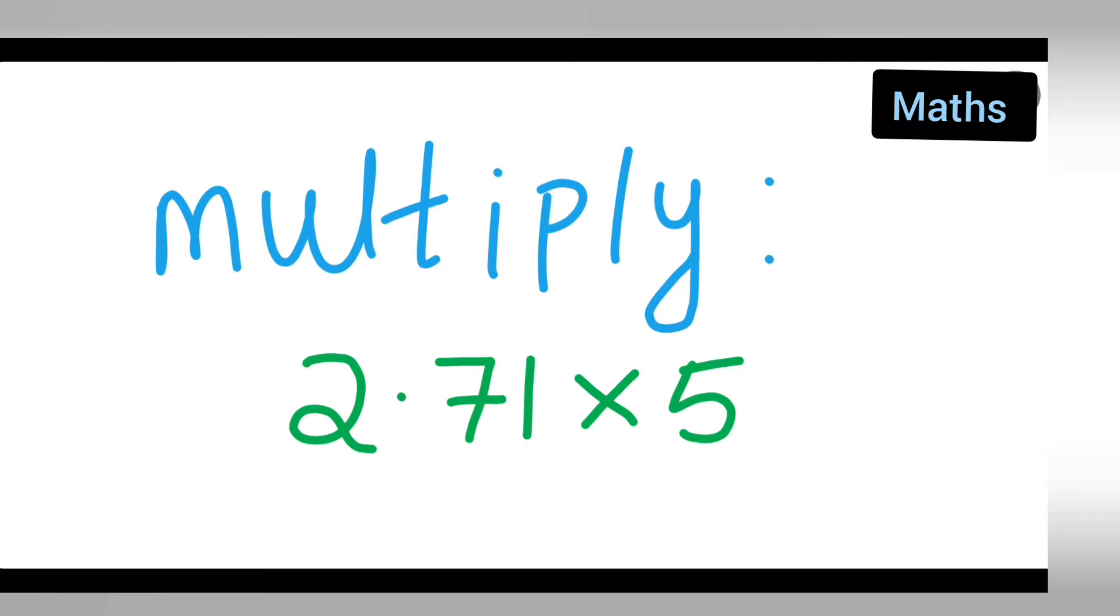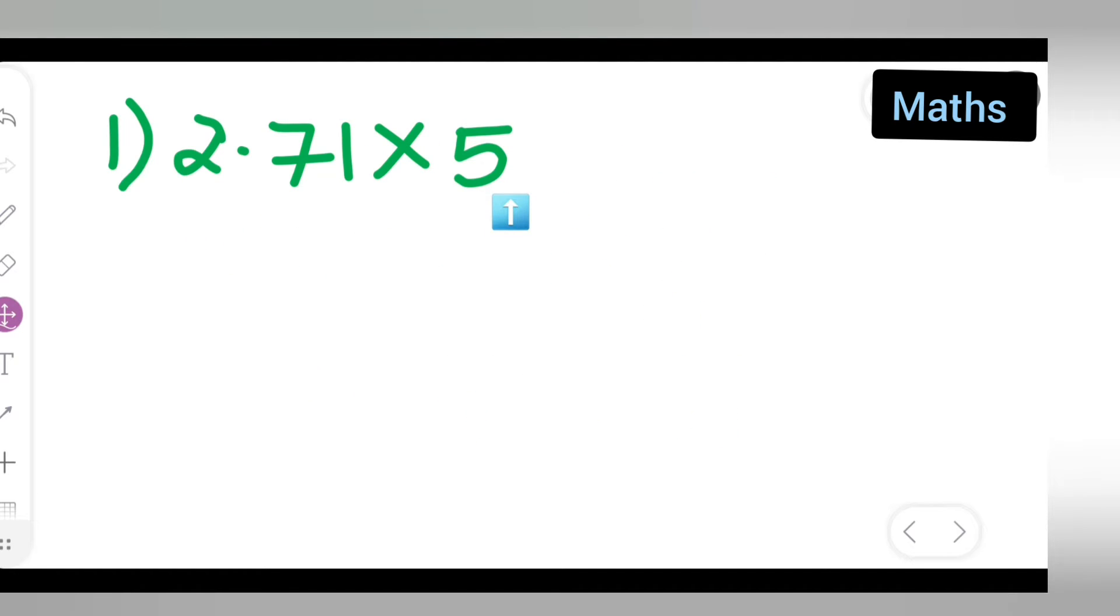Welcome to today's mathematics class. Let's see how to multiply. Today's question is how to multiply 2.71 multiplied by 5. Here you'll have a decimal point and you'll find it difficult to multiply, right?